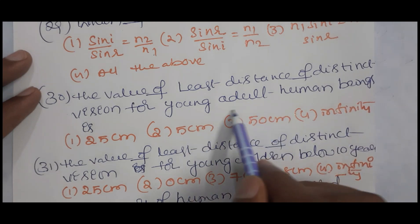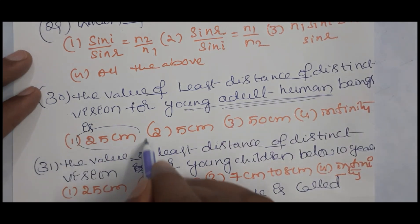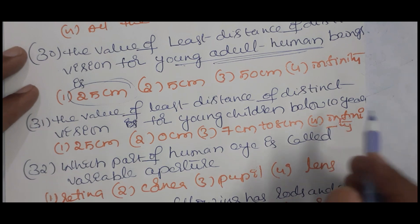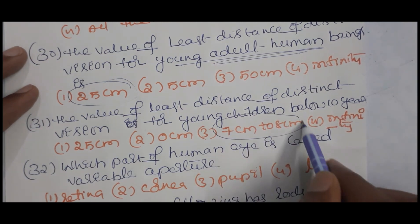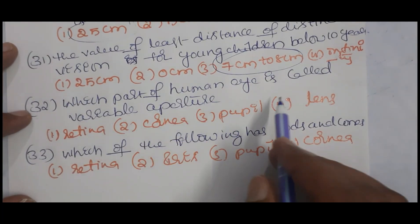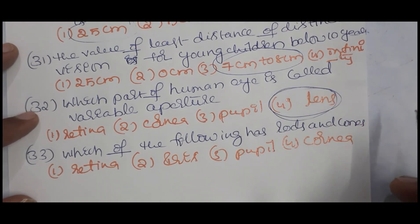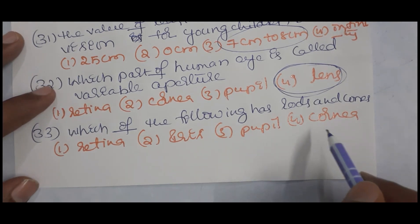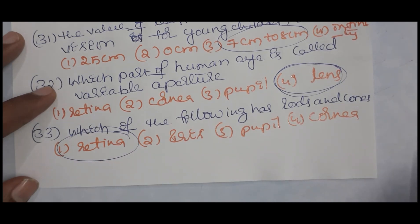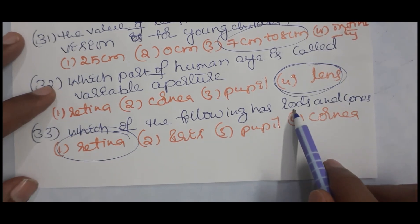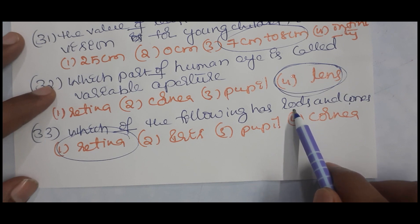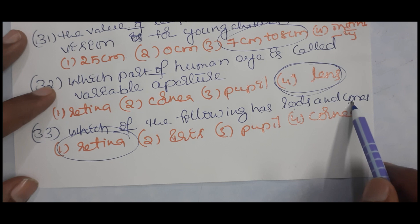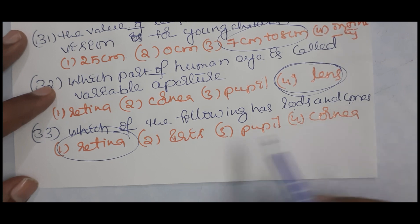The least distance of distinct vision for a young adult is 25 centimeters. For young children below 10 years, it is 7 to 8 centimeters. The variable aperture in the human eye is the lens (iris). The retina has rods and cones: rods identify the intensity of light and cones identify the color of light.